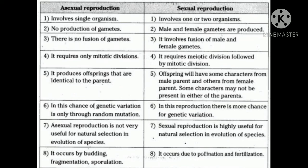In Sexual Reproduction, there are more chances for genetic variation because of meiosis and chromosomal recombination. Asexual Reproduction is not useful for the evolution of species, whereas Sexual Reproduction provides much higher chances for variation and evolution.